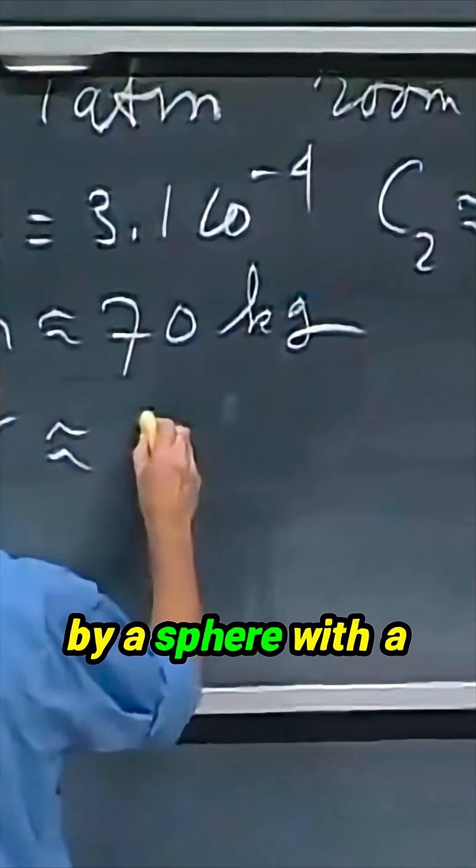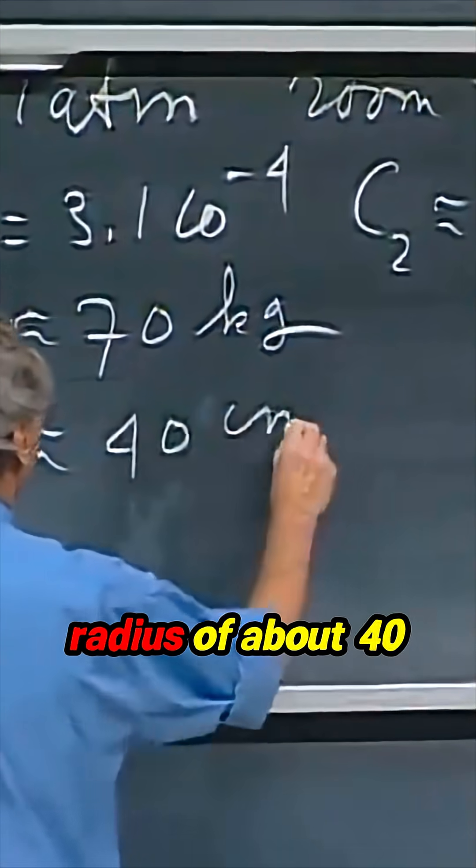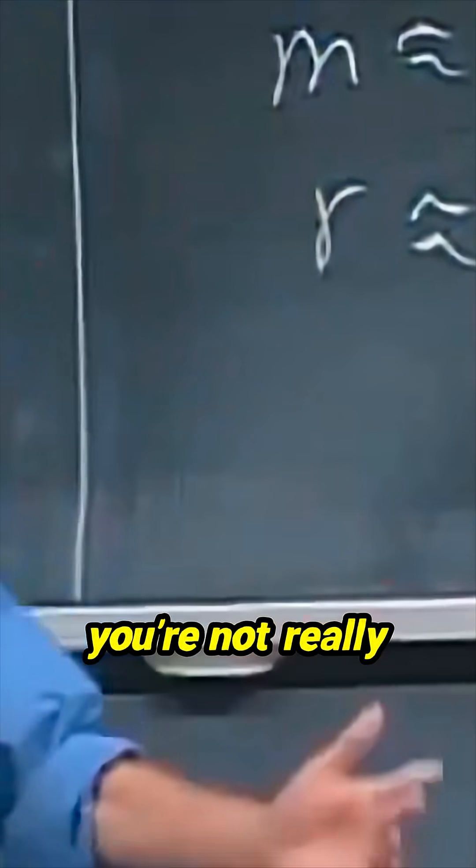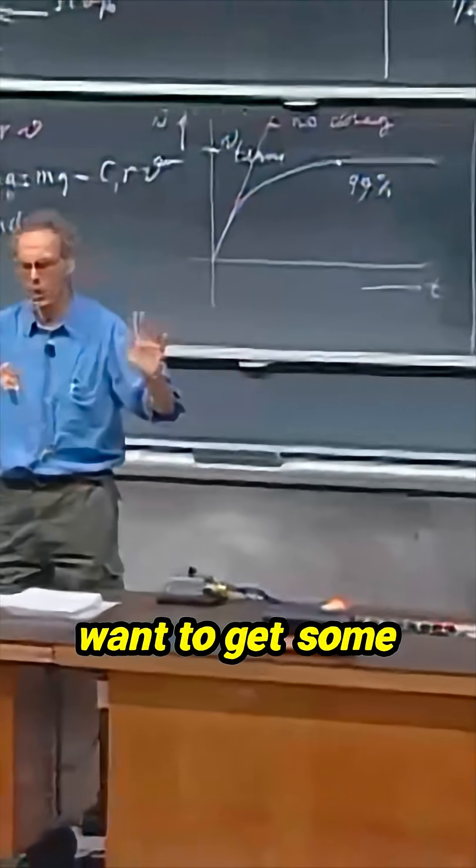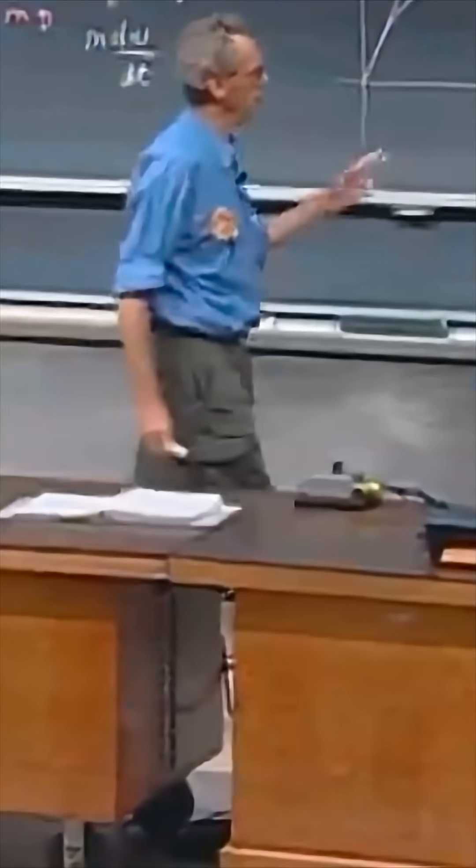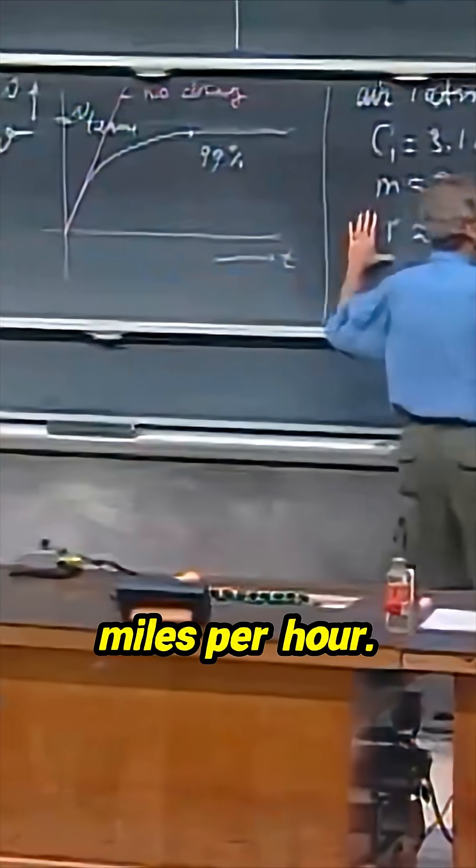If I can approximate you by a sphere with a radius of about 40, also an approximation, you're not really like a sphere, but I want to get some rough numbers. The terminal velocity is 150 miles per hour.